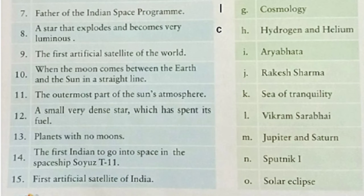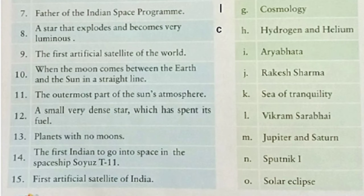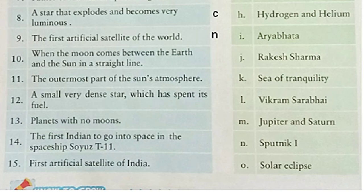Now let's see question number 9: the first artificial satellite of the world. It is Sputnik and it is given in point number N, Sputnik 1. So, we will write N here. Now let's read out number 10: when the moon comes between the earth and the sun in a straight line, it is called solar eclipse. Our answer is given in point O.